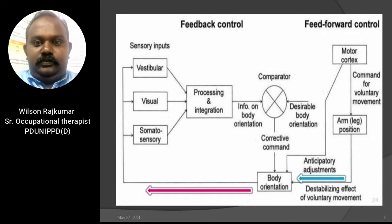We will now see the complex interaction of the musculoskeletal and neuronal systems. There are two types of control which take place to maintain a particular posture: feedback control and feed-forward control. In feed-forward control, the motor cortex sends a command for voluntary movement, giving anticipatory adjustment to the destabilizing effect of voluntary movement, leading to correction of body orientation. Changes in body orientation provide vestibular, visual, and somatosensory feedback, which is processed and integrated, and a corrective command is given to correct body posture.